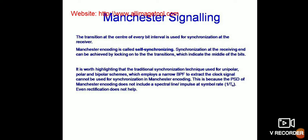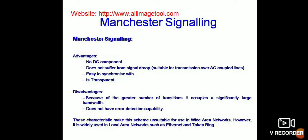This is because the power spectral density of Manchester encoding does not include a spectral line at the clock frequency. Manchester signaling advantages include: no DC component, no signal drops, suitable for transmission over AC coupled lines, and easy synchronization since it is transparent. Because of the greater number of transitions, it occupies a significantly larger bandwidth and does not have error detection capability. These characteristics make it suitable for wide area networks, and it is widely used in local area networks such as Ethernet and token rings.